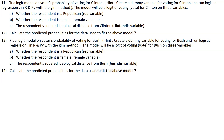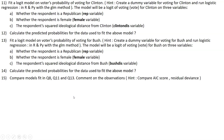Question fourteen asks to calculate the predicted probabilities for the Bush model. Question fifteen asks to compare the model fit across questions eight, eleven, and thirteen, commenting on observations. The hint is to compare AIC scores and residual deviance and write an analytical commentary about the output.